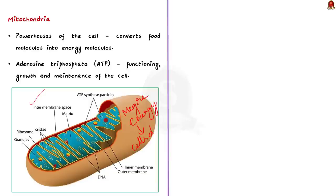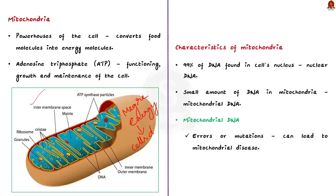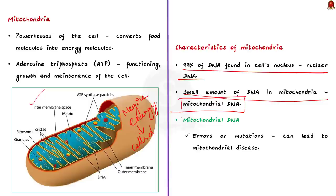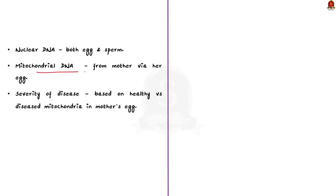To understand how mitochondrial replacement therapy works, it is important to understand the characteristics of mitochondria. Over 99% of our DNA is found in the cell's nucleus and is called nuclear DNA. But a small amount of DNA is also contained in mitochondria, called mitochondrial DNA. This mitochondrial DNA contains a small number of genes with information necessary for mitochondria to function. If there are errors or mutations in this mitochondrial DNA, it can lead to mitochondrial disease. The nuclear DNA of a child comes from both egg and sperm, but mitochondrial DNA is largely passed to the child from the mother through her egg.